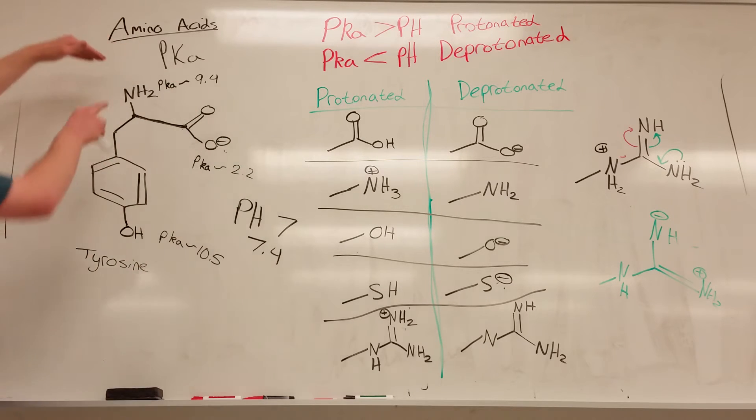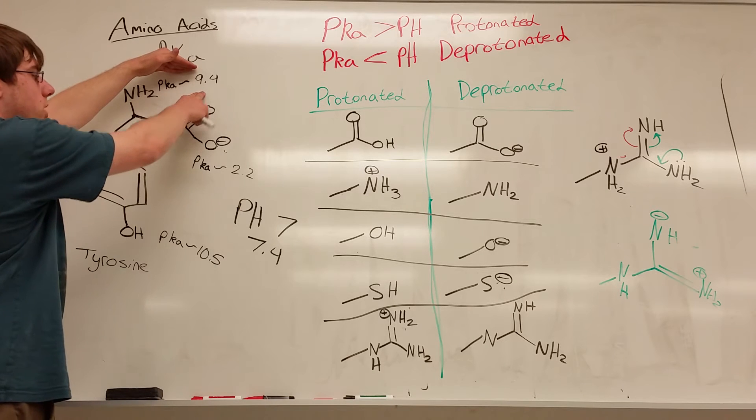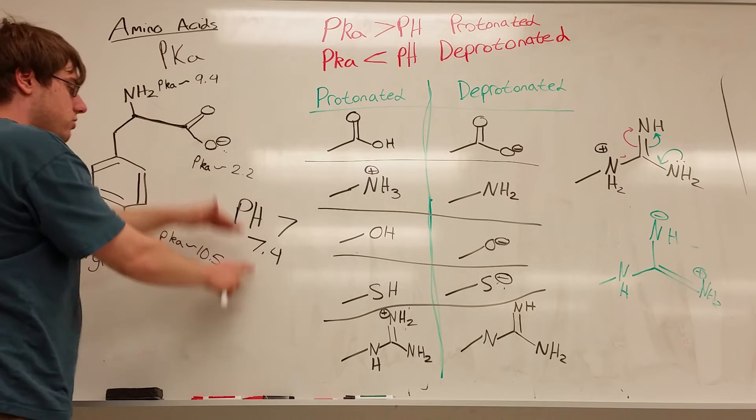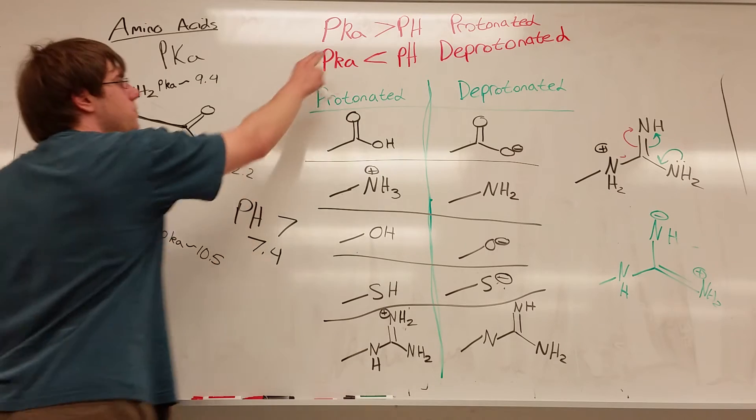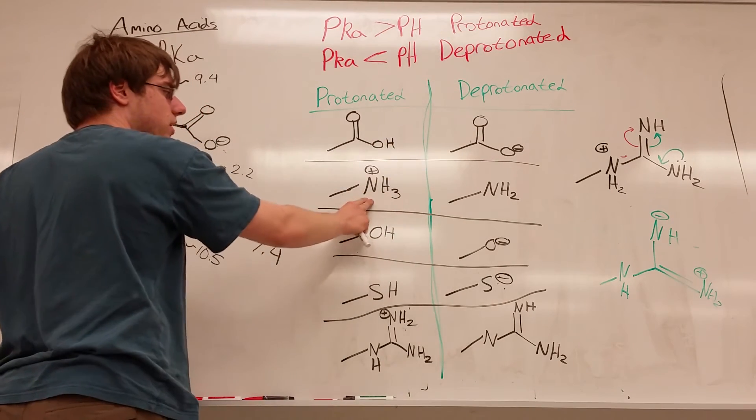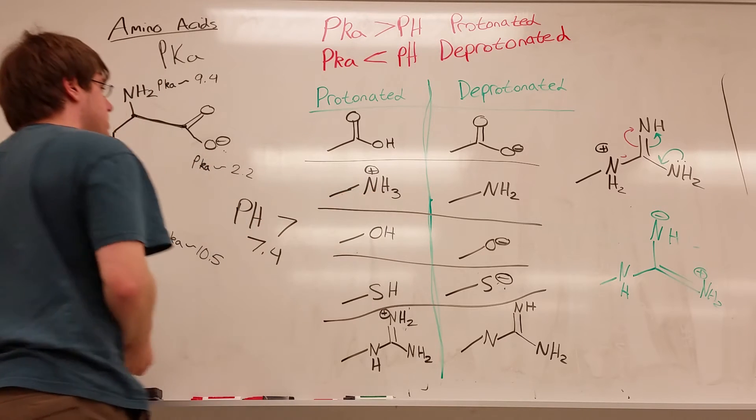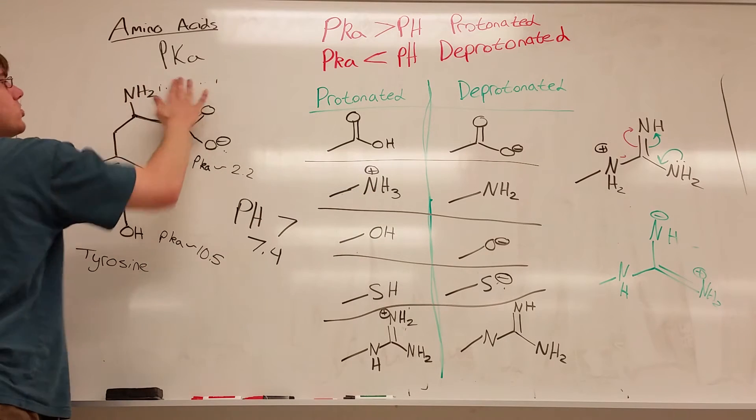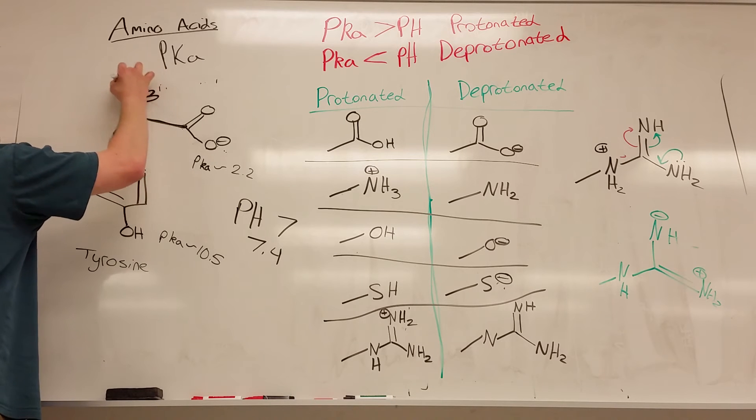Now let's look at the next functional group. NH2 has a pKa of 9.4. 9.4 is greater than the pH, 7. When pKa is greater than pH, you are protonated. Go to your list. Here's my nitrogen group, NH3 positive in its protonated form. So I'm going to write NH3 plus.